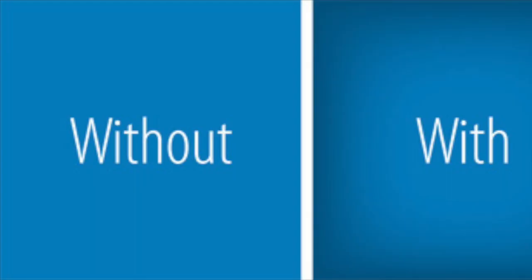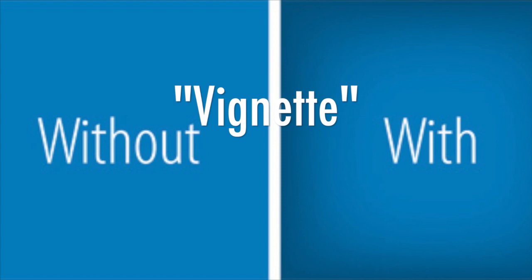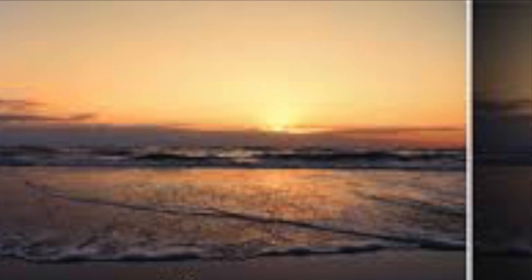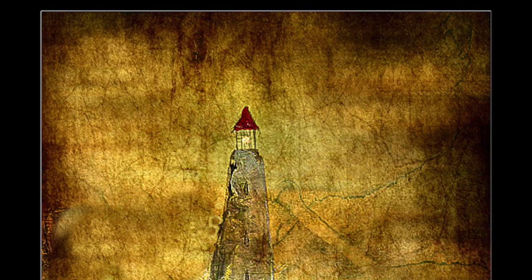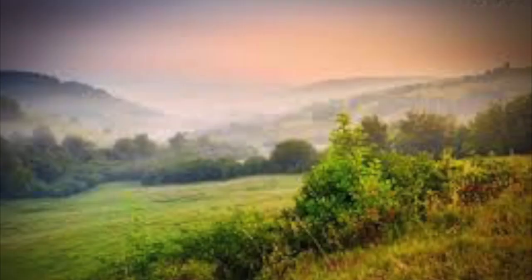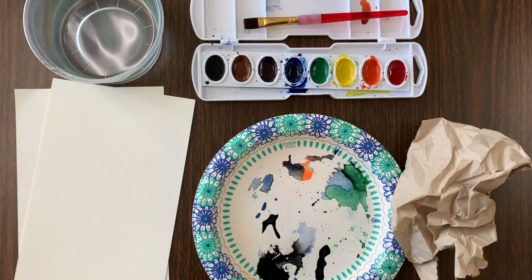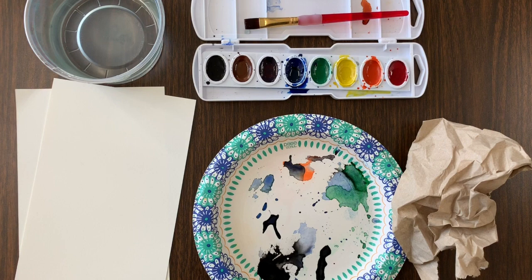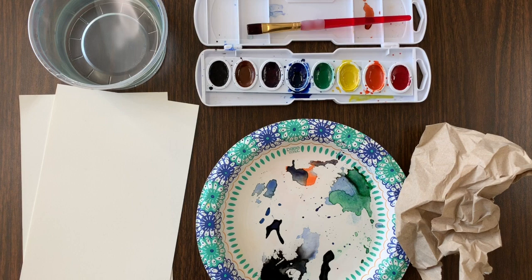The first thing we'll make is a watercolor background with a vignette. Vignette is a French term referring to a blurred or darkened edge. Once you know what to look for, you'll see vignette frames are everywhere — they're a common practice in art to draw your eye towards the center of the image. For this part of the project, we'll need watercolor paints, watercolor paper, paper towels, some fresh water, and a brush.